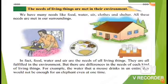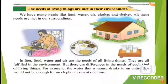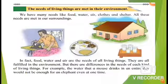The needs of living things are met in their environment. We have many needs like food, water, air, clothes and shelter. All these needs are met in our surroundings. Students, please look at the picture. Food, water and air are the needs of all living things and they are all fulfilled in the environment. But there are differences in the needs of each kind of living thing.